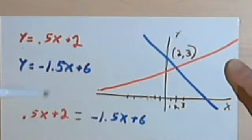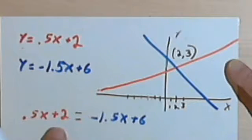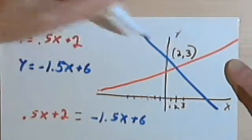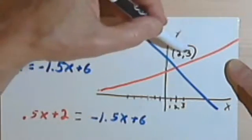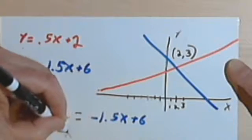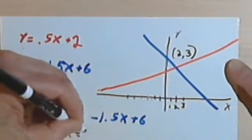Then we can know that the solution to this is going to be just the x value where the two lines cross. So the solution to this equation is going to be x equals 2.